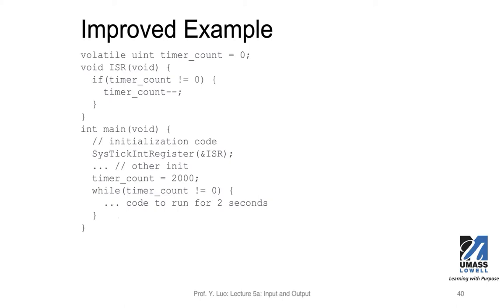We improve the example by checking whether the counter is zero or not before decrementing, so we can avoid bypassing zero. We're running out of time, so we'll cover the remaining few slides in the next class.